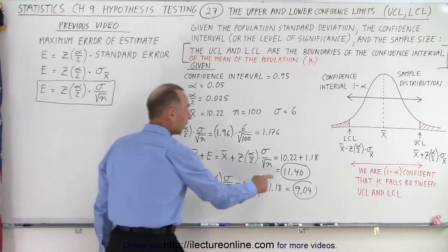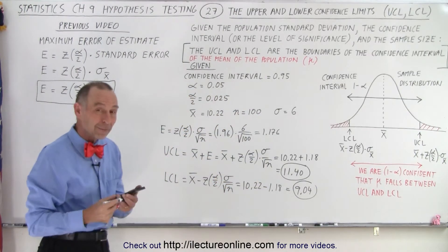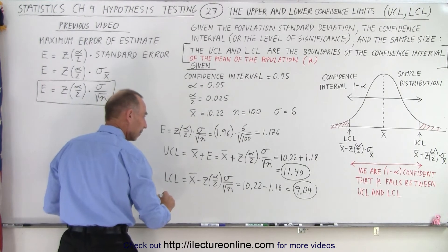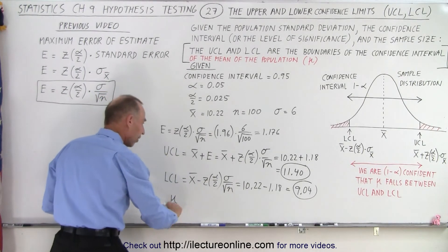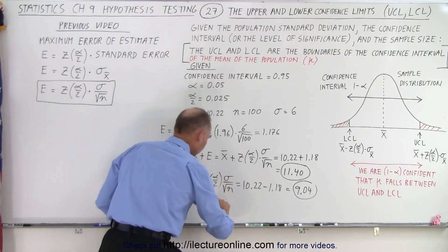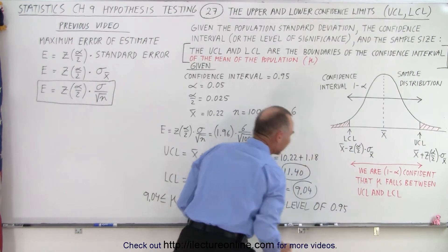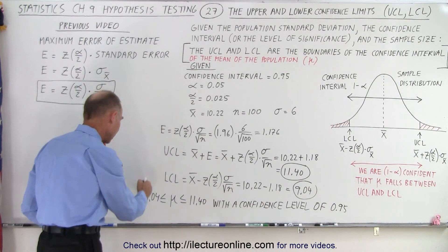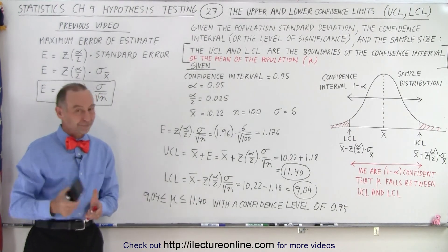Now we have the upper confidence limit and the lower confidence limit — the boundaries of the population mean. We expect the mean of the population to fall with a certain level of confidence within these limits. We can say that the mean of the population will fall somewhere between 9.04 and 11.40 with a 95% confidence level. That is what we mean by the upper and lower confidence limits — that's how we define it and calculate it.